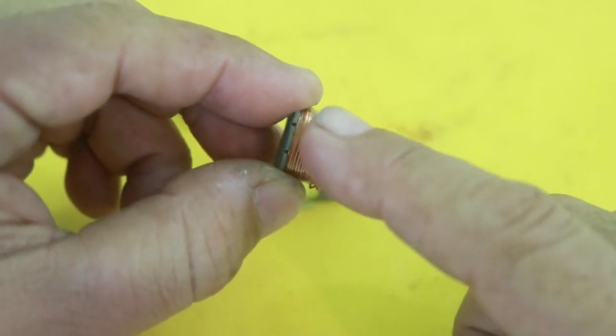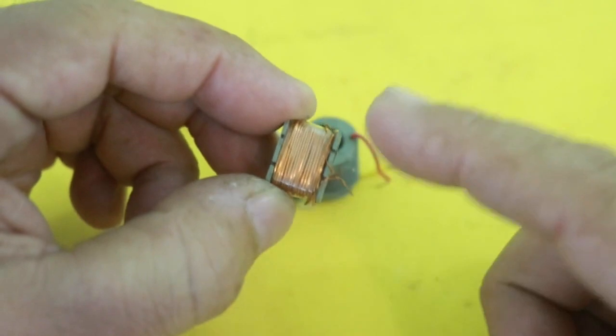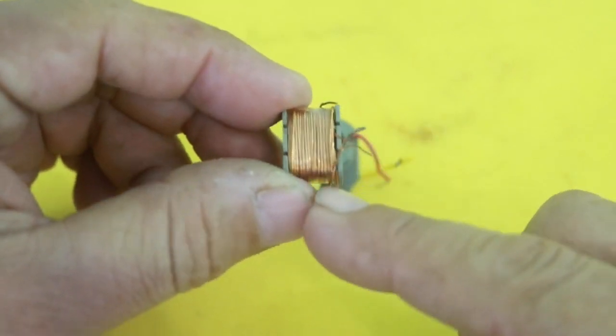One of them, as we said, 7 turns, a center tap, another 7 turns. And the other, the feedback coil, only 5 turns.